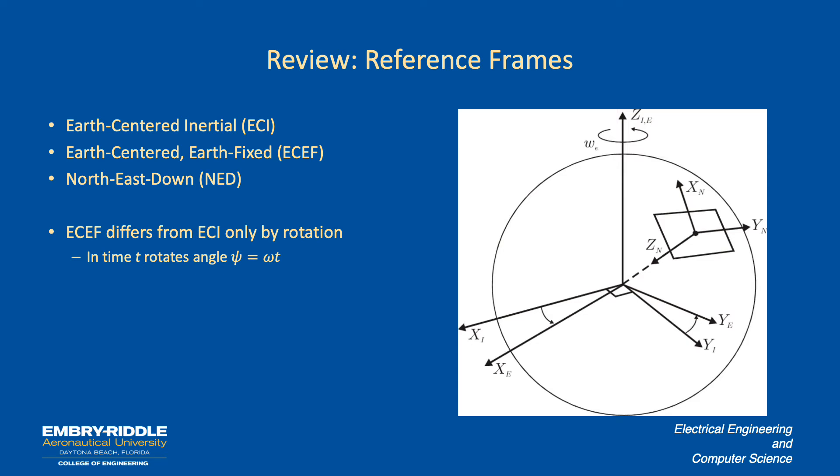The only way the earth-centered earth-fixed difference from the earth-centered inertial is by that rotation. It rotates in time so to get in a time t from the origin or over a course of time t it rotates through an angle psi which we're going to take as omega times t.